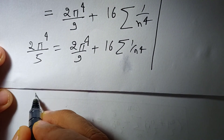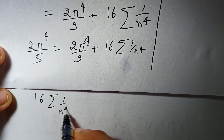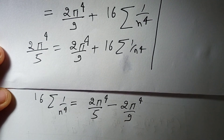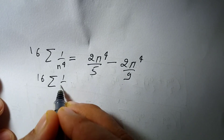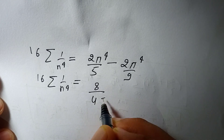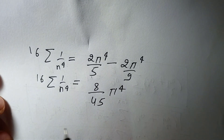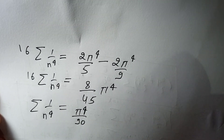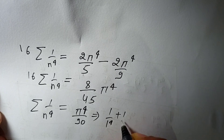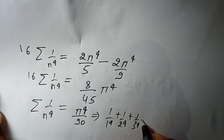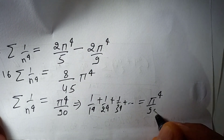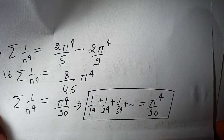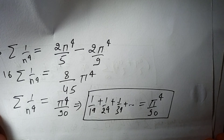Equating LHS and RHS: 2π⁴/5 = 2π⁴/9 + 16·Σ(1/n⁴). So 16·Σ(1/n⁴) = 2π⁴/5 − 2π⁴/9, which gives 16·Σ(1/n⁴) = π⁴·(18−10)/45 = 8π⁴/45, hence Σ(1/n⁴) = π⁴/90. Expanding: 1/1⁴ + 1/2⁴ + 1/3⁴ + ··· = π⁴/90. This shows that once you know the Fourier coefficients a₀, aₙ, bₙ, you can easily apply Parseval's Identity and prove the result.